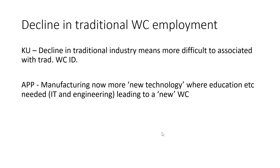There's also a decline in traditional working class employment. Industry normally associated with working class identity is declining — fewer pits, less manufacturing, the rise of technology and robots, and the decline in fossil fuels. This has led to a decline in what traditionally would be seen as a working class job. Manufacturing is now more technology-based and requires education, so those jobs are moving more towards the middle class, potentially creating a new working class with more disposable income.